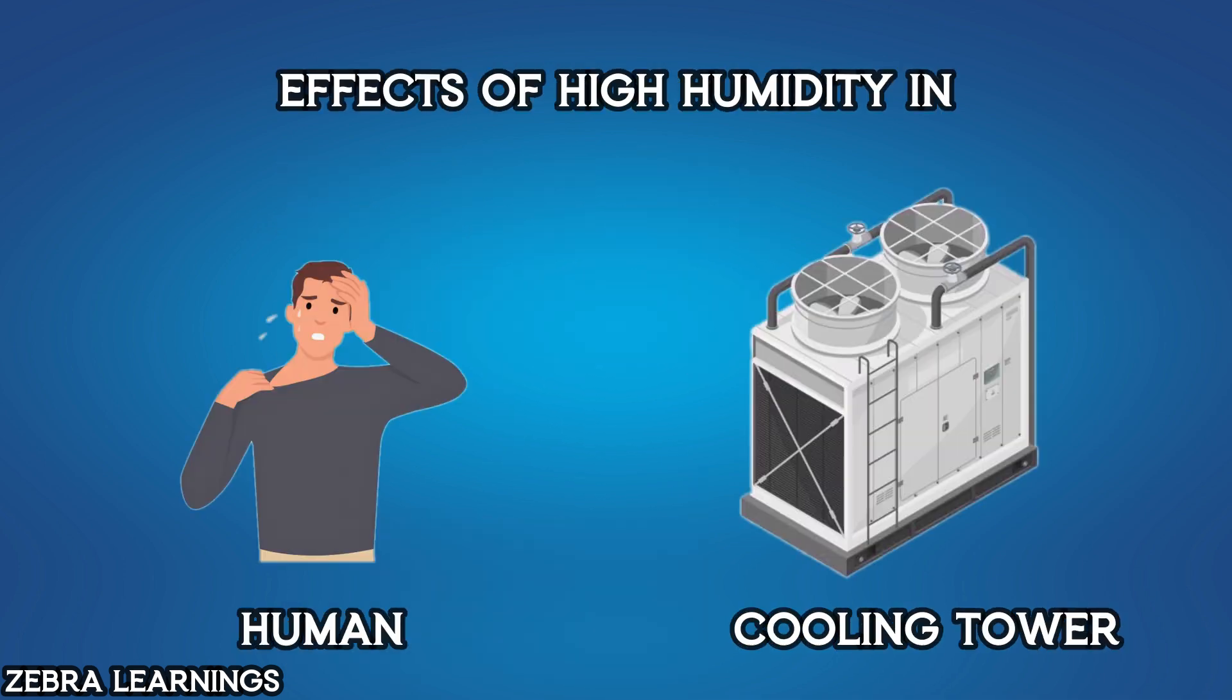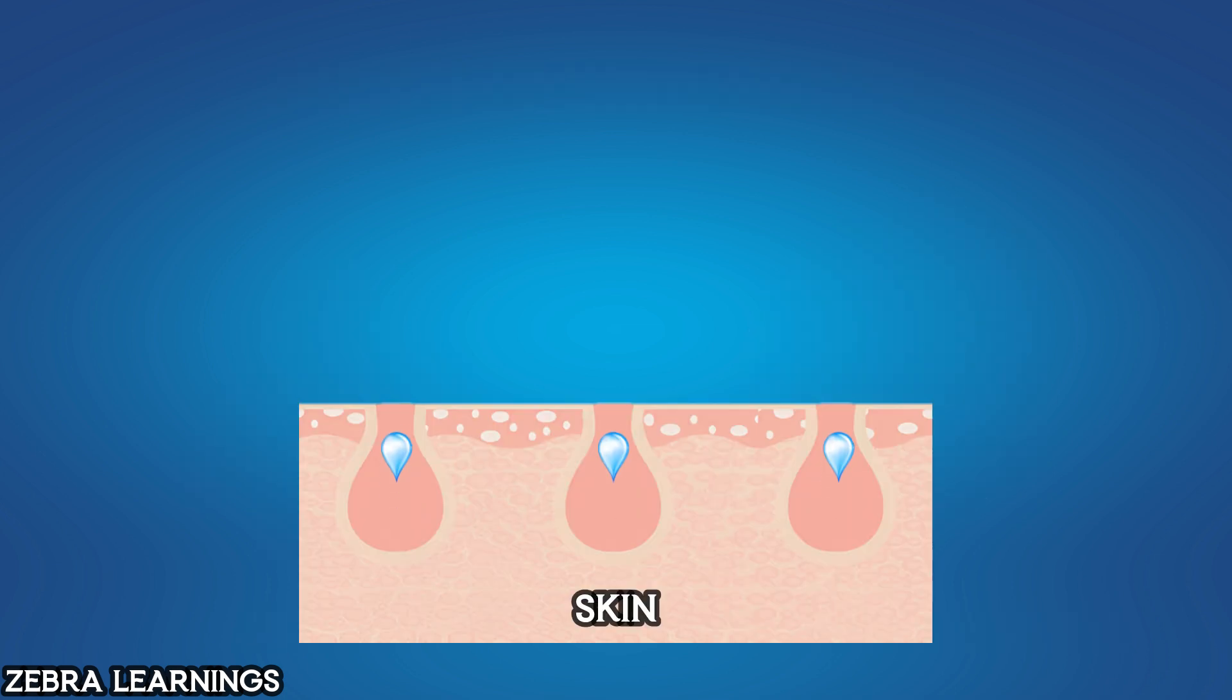Let's see how high humidity levels can affect human body temperature and cooling towers. Our bodies constantly release sweat through tiny pores on our skin. This sweat evaporates from our skin, taking away heat from our body and mixing with the air. This process helps maintain our body temperature at a normal level.